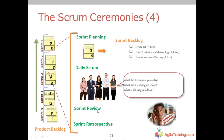Immediately after the sprint review we have our retrospective — talking about what's working well and what needs to be improved. If you wait until the end of the project for a post-mortem, it's too late to fix anything. This is where the team openly and honestly discusses: team dynamics, communication issues, product owner engagement, requirement quality, environment issues — any impediments. How can we do this better next sprint? That's really the heart of agile: continuous, predictable process of planning, daily visibility, showing work, and improving.